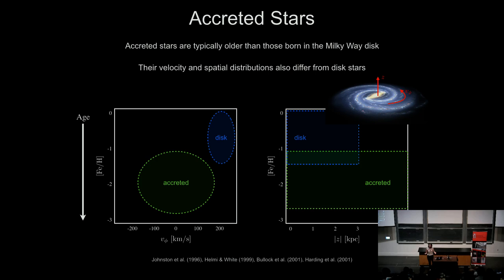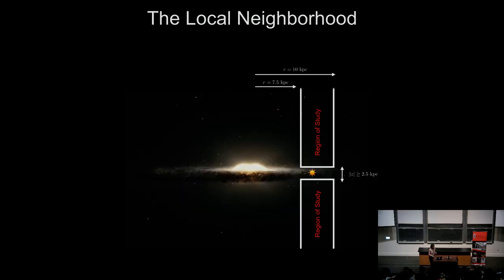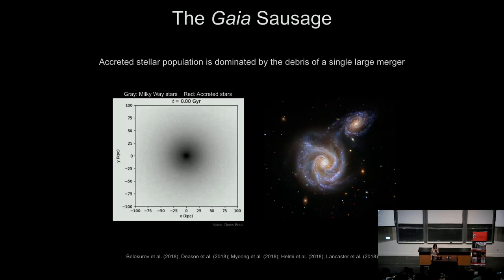When the second Gaia data release came out at the end of April, many groups did work very similar to this, and immediately something beautiful just fell out. This is one of those amazing things that happens when you have a big step in the quality and amount of data in front of you. We ended up finding our closest relative. The results I'm going to show you pertain specifically to looking in the region close to where the sun is. The end result — in work primarily by Vasily Belokurov and followed by Amina Helmi and collaborators — was that one major galaxy was identified that got eaten up by the Milky Way about seven billion years ago.